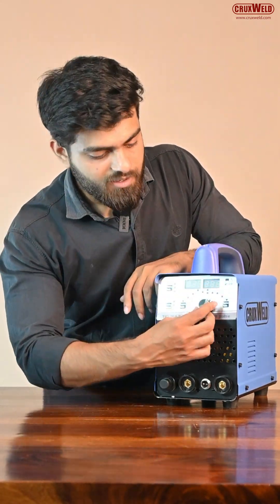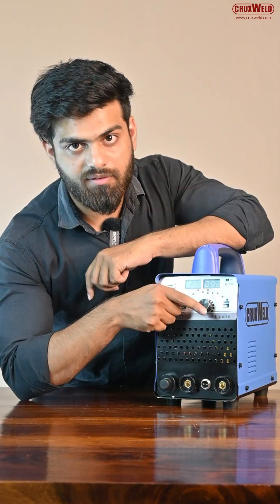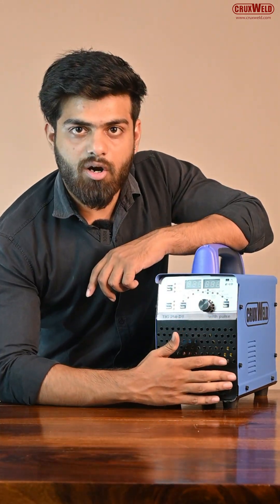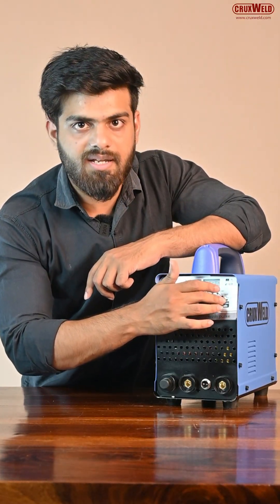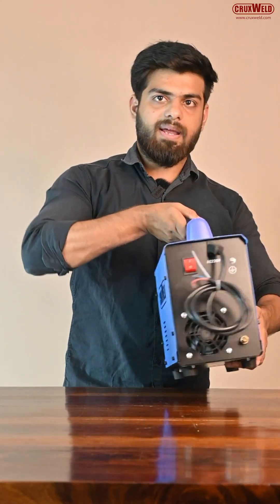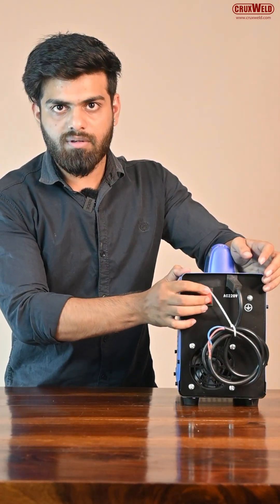In the front panel there is a knob where you can control current ampere and other functions. At the bottom of the machine there are options to connect earthing clamp and TIG welding torch. At the top of the machine there are buttons to switch welding methods and current amperes. And from the back panel there is a button to turn it on and off.